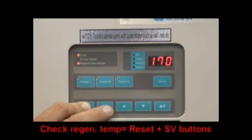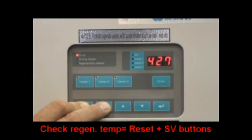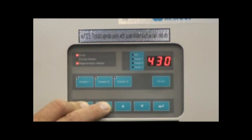We recommend that the regeneration temperature be checked once or twice a month to ensure that the dryer is capable of removing moisture from the system. To do this, press and hold the reset and SV keys together. The temperature has a factory setting of 428 degrees Fahrenheit or 220 degrees Celsius.